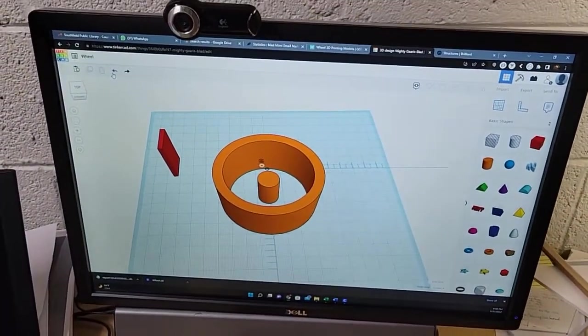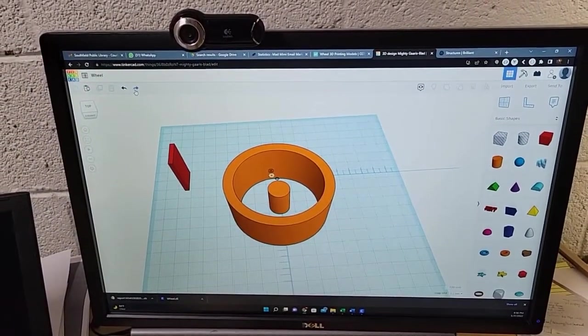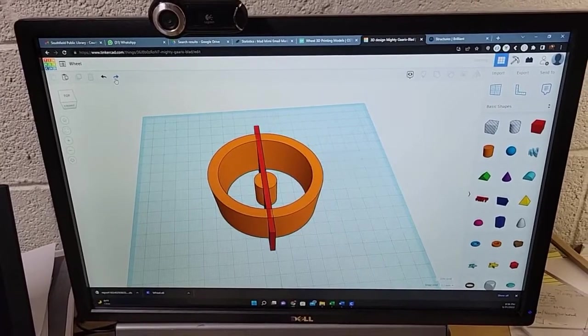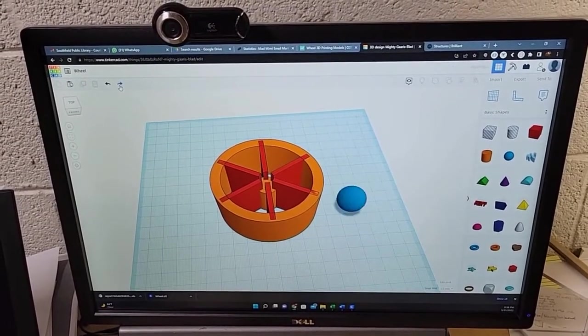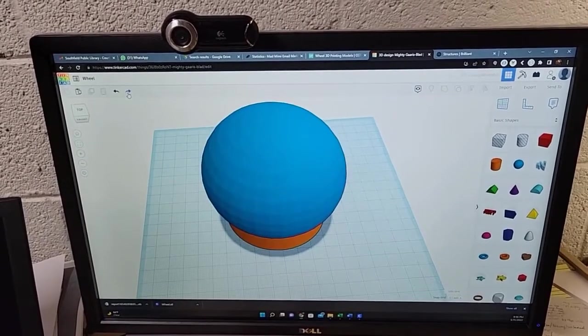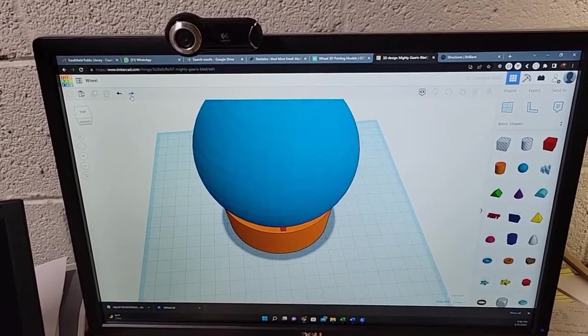So we went over to Tinkercad. Great work creating a free product. And we designed something that looked about like this. A little spoke action there. Of course we gotta hollow it out to make it look like a cool rim.